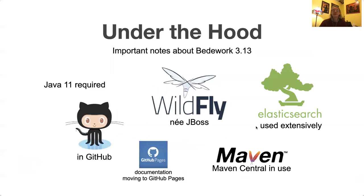What's underneath it all at the moment: Java 11 is required. It's all on GitHub — there's a bunch of Beadwork projects there. The documentation is moving to GitHub Pages. It runs on Wildfly. We use Elasticsearch extensively. And it's all built using Maven and a bunch of plugins I wrote to help with that.